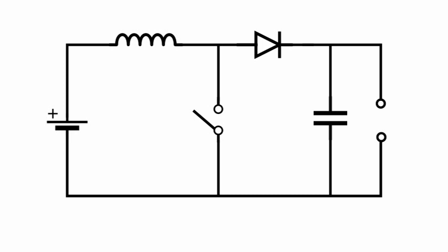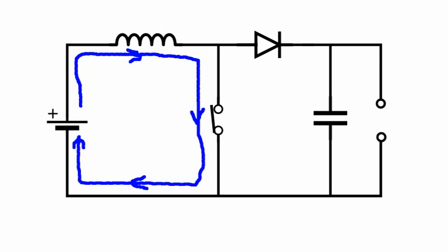This is the basic circuit for the boost converter. When we close the switch, the current flows through the inductor and a magnetic field is created. When we open the switch, the magnetic field collapses.